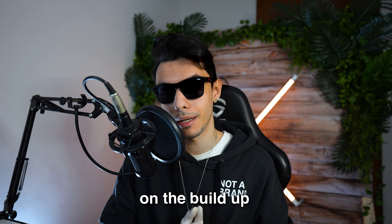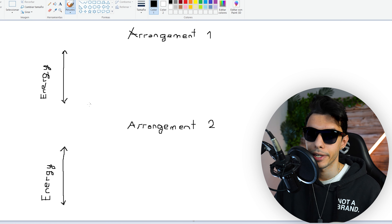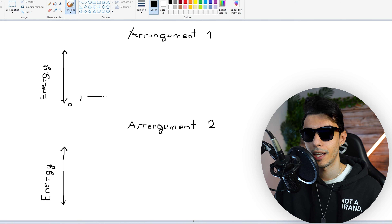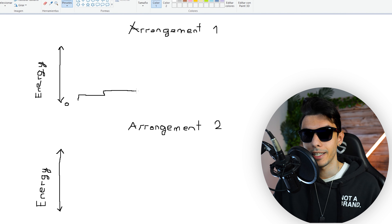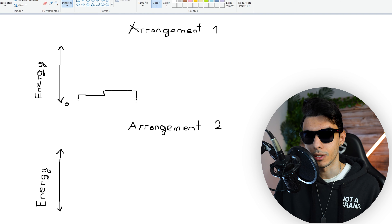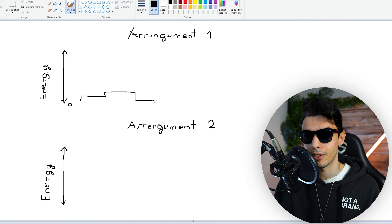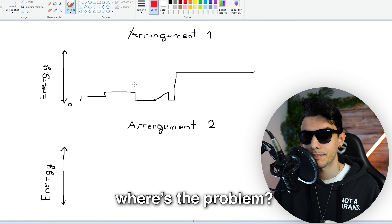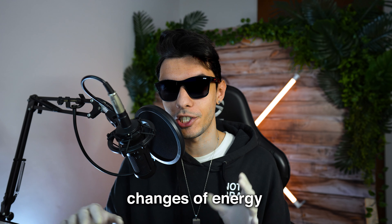Back on the PC — I'm using Paint to explain this. I had two different arrangement ideas, and the issue was in the build-up. This is the zero energy level and this is the maximum, which is the drop. The first idea was: start soft for the first verse, then the second verse with a bit more energy, then drop back to zero to create tension with only the melody, then a short build-up, a gap for the last vocal phrase, and then the drop.